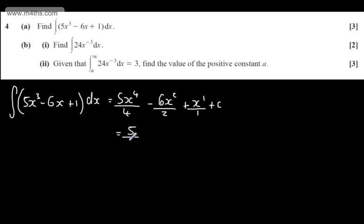So tidying this up, we'll have 5 over 4, x to the fourth, minus 3x squared, plus x, plus a constant. So that's part A done. In part B,